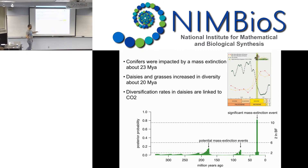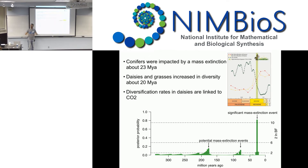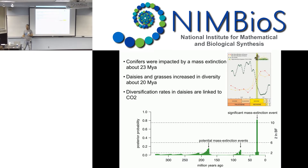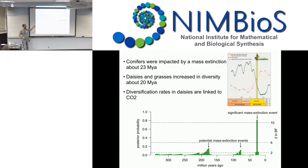Putting the two studies together: there was an increase in diversification in daisies and grasses at basically the same time as the mass extinction of conifers. When the trees went away, there was space for grasses and daisies to invade the landscape and start diversifying. There was also a large volcanic eruption at that time, and the grazers also started diversifying much more rapidly around then — showing a big change in landscapes around 23 million years ago.